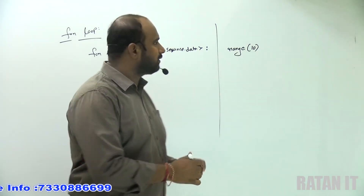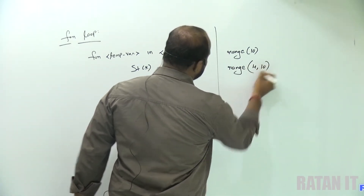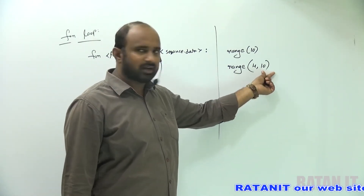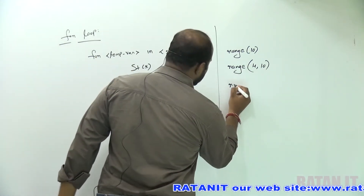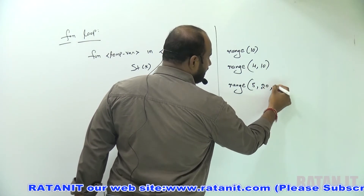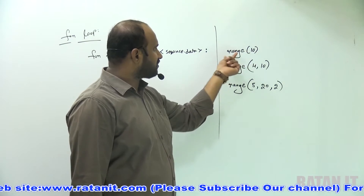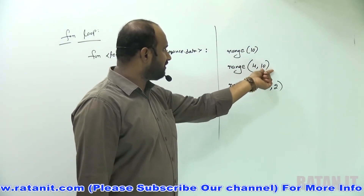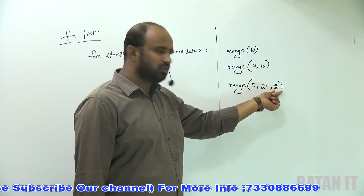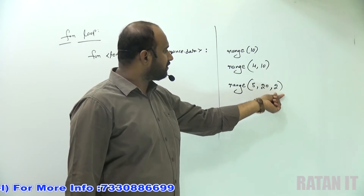Starting value up to the 10 value. If you want range of 4 to 10, that value starts with 4 and ends with 10. Range of 5 to 20 — the increment value is 2. By default the increment value is 1; if you want an increment value more than 1, after a comma you specify the increment value.